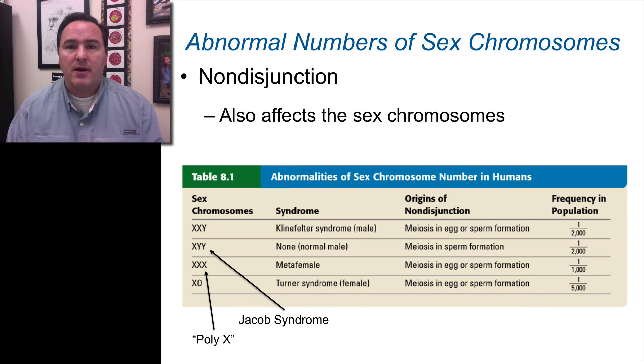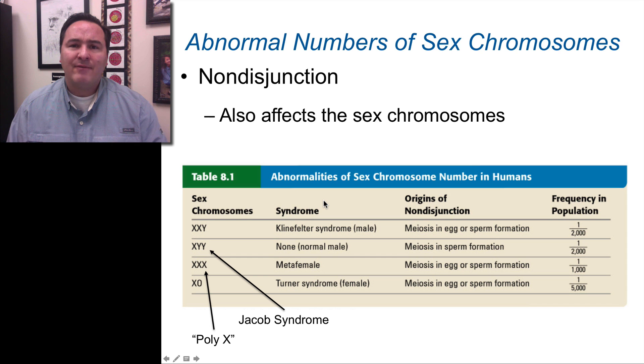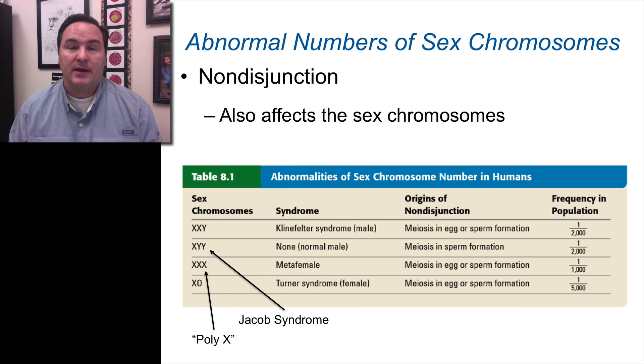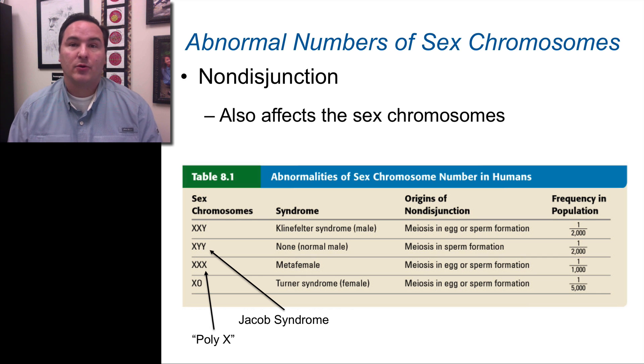But in most cases, these non-disjunction events are occurring all the time in all chromosomes — in chromosome number 1 and chromosome number 2, you can have these non-disjunction events. When they occur in those chromosomes, it just results in a non-viable offspring. But the case of the sex chromosomes tends to be quite different, where having multiple sex chromosomes — either extra Ys or extra Xs — does not necessarily result in an offspring that is not viable.